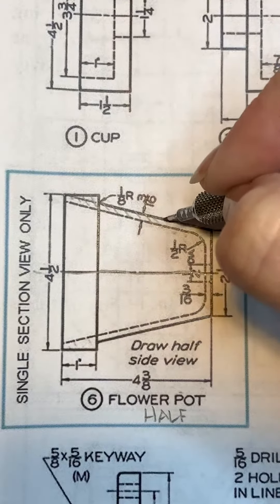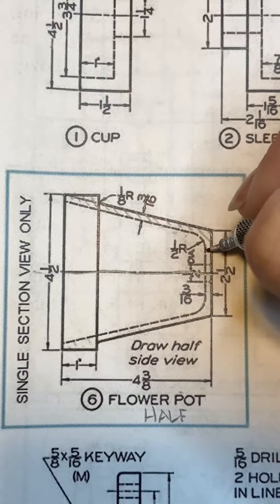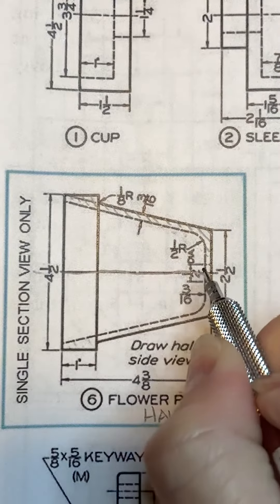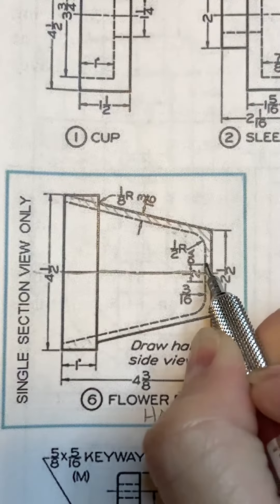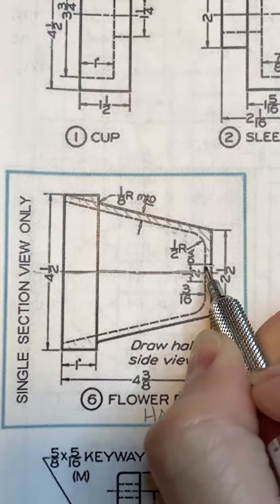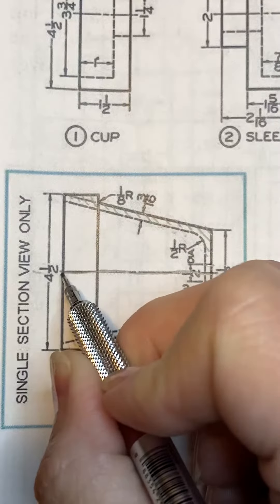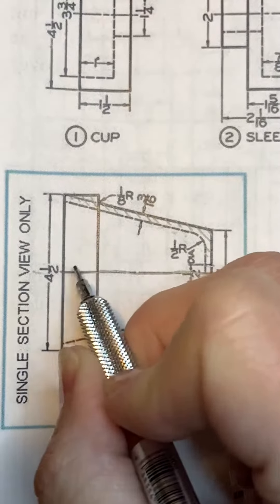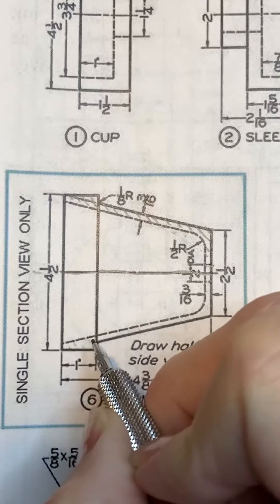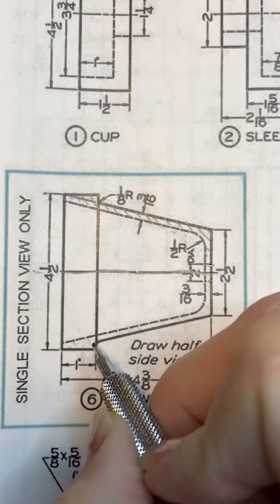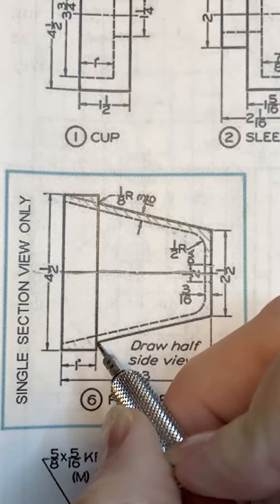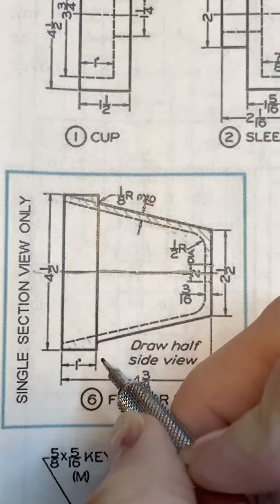So you're going to cut through the walls of your flower pot. Now right here it has a hole in it to drain. So this is a hole below your cut line. You're only going to draw what you see. Remember, there's no hidden lines in a section.